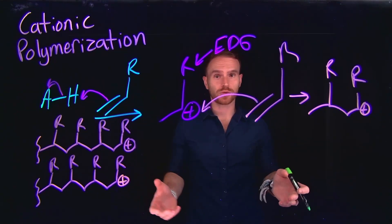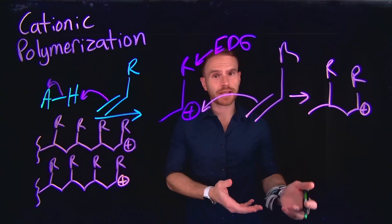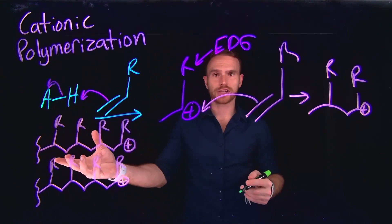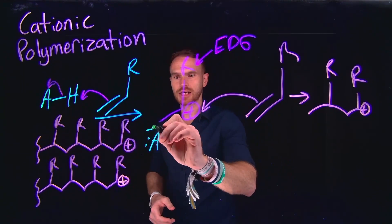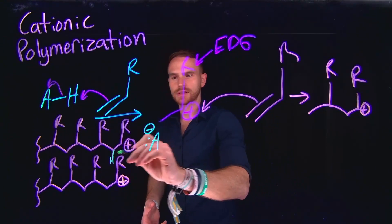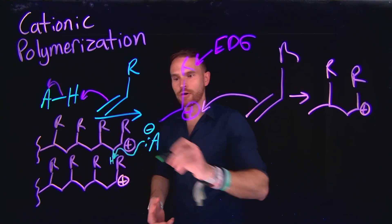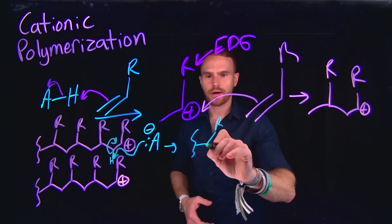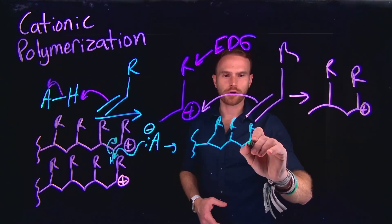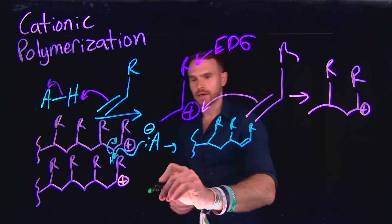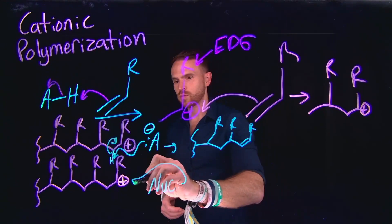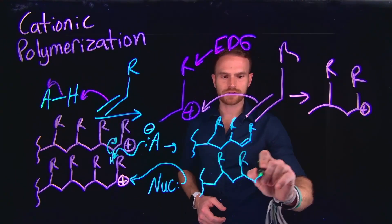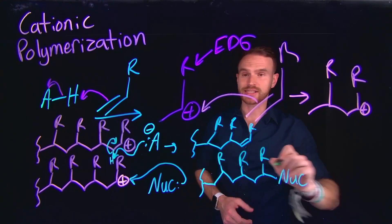Similar to radical polymerization, the final step in cationic polymerization is called termination, and there are two different pathways. Remember that a conjugate base was generated from the deprotonation of the initial acid. Therefore, this conjugate base is still present in solution, and there are alpha carbons — alpha to the carbocation — that can be deprotonated. If this occurs, these electrons come down and regenerate an alkene species, meaning the final end of the polymer chain would be a new alkene. Alternatively, additional nucleophiles can be added to the reaction mixture, which would simply attack the carbocation, so termination yields a nucleophilic addition product at that carbocation species.